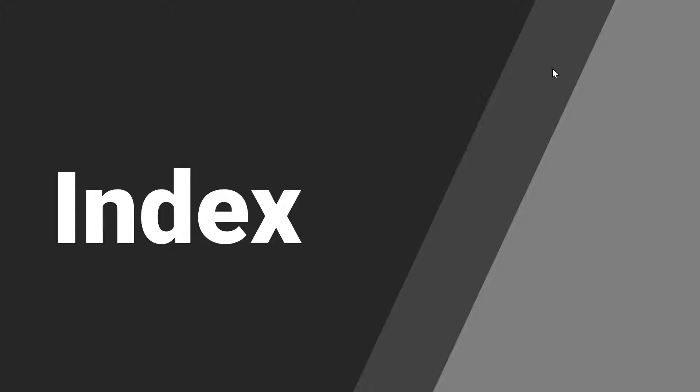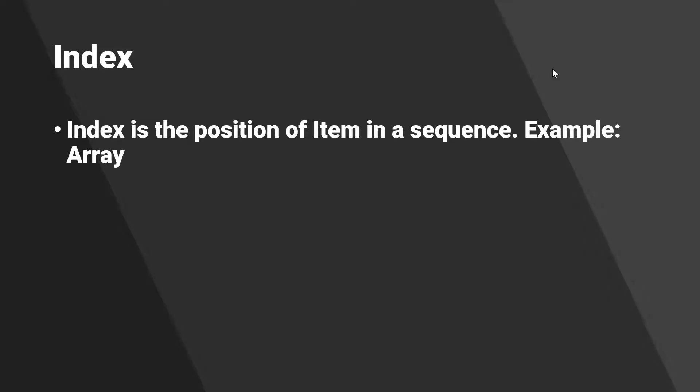First is about the index. Index is something that I believe you already know, but let's understand more about this index in C#. Index is the position of an item in a sequence. For example, if we have an array with five elements, then the index starts from zero and goes to four.